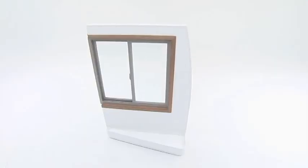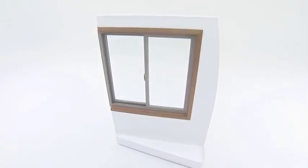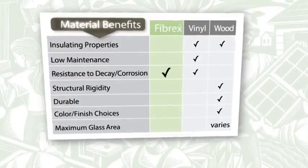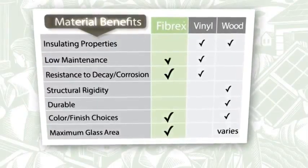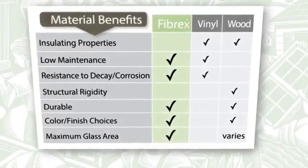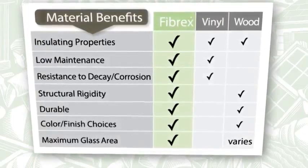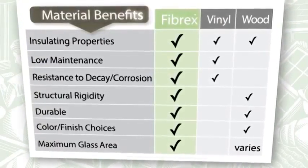Because the Fibrex composite material that we use in our framing system is so strong, we can make a very, very large glider window. Fibrex material, being a composite material, offers a lot of benefits — from weatherability to solid construction and structure. Fibrex composite material means you're never going to have to paint and scrape again.